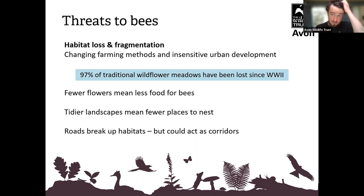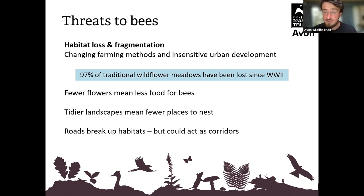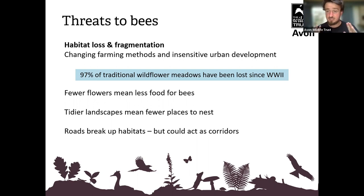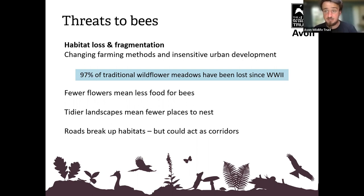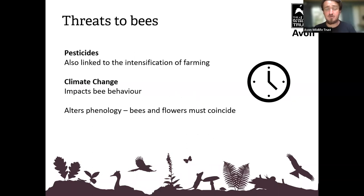Roads break up habitats too. Those remaining habitats are now divided, and roads act as a great divide for insects like bees — tricky to cross without getting pulled away in a lorry's tailwind. But roads could be a real asset if we treated our road network effectively. It was designed to connect up the country — so how about we use it to connect up habitats, treating those roadside verges as best we could?